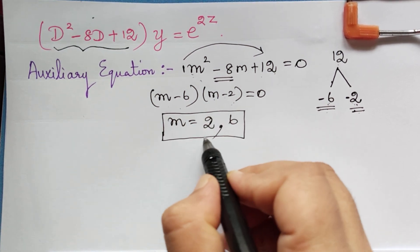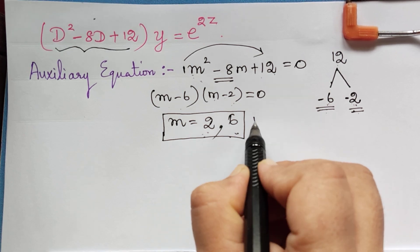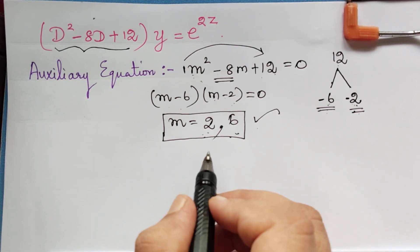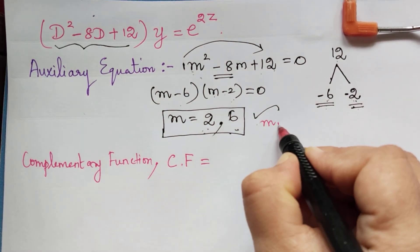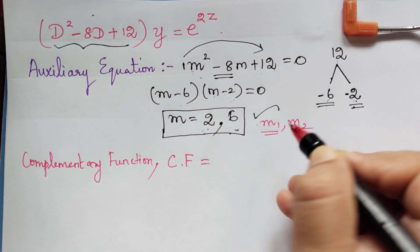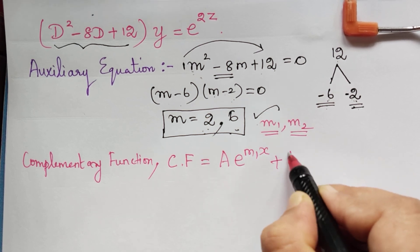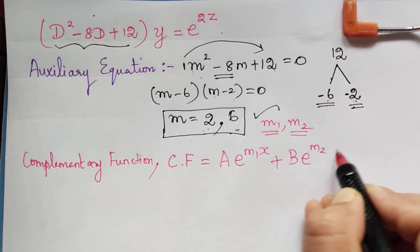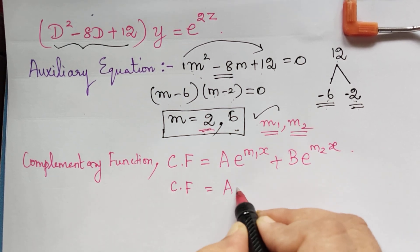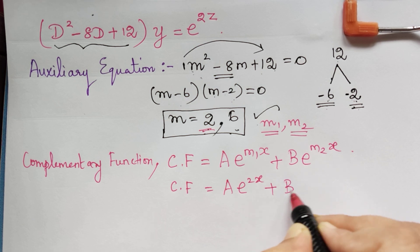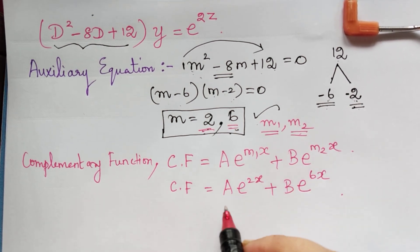The roots are m = 2 and m = 6, which are distinct roots. Whenever the roots are distinct, the complementary function is given by a·e^(m₁x) + b·e^(m₂x). Here m₁ = 2 and m₂ = 6, so the complementary function is a·e^(2z) + b·e^(6z).